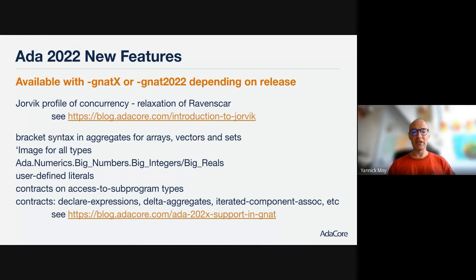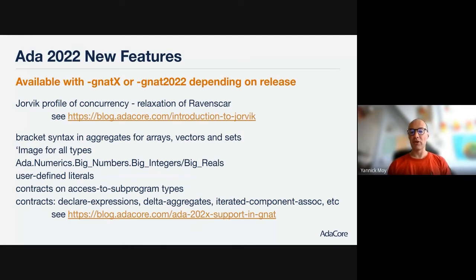Related to that, you can now have user-defined literals for a type. You can have literals of integers, floats, or strings and automatically have creation from that literal to the type of your choice. Related to contracts and dynamic checking or proof, we now have contracts on access-to-subprogram types, so you can have callbacks with their own preconditions and postconditions. This will also be allowed in SPARK, enabling proof that involves programs using such callbacks.